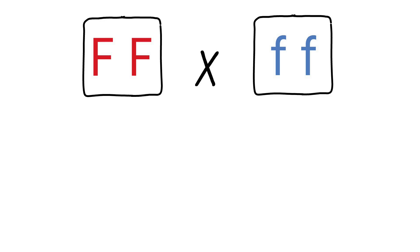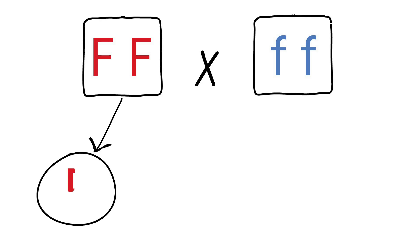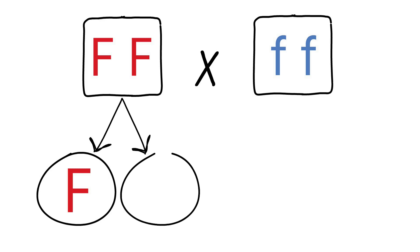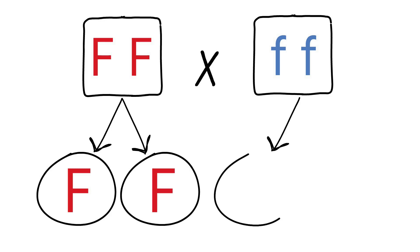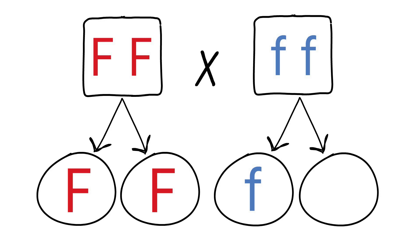One parent is homozygous dominant for freckles and the other is homozygous recessive for freckles. In this case, if you're homozygous dominant you don't have freckles, as freckles are a recessive trait meaning you have to have both recessive alleles to show freckles. In all their cells, these parents will have their two alleles because they have two chromosomes — a matching pair.